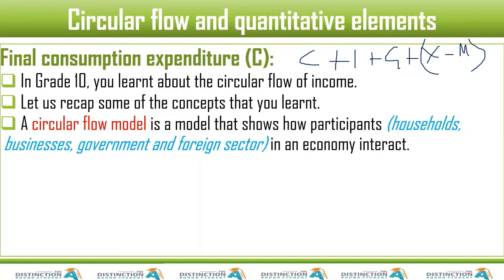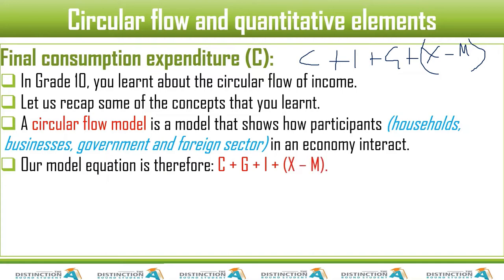In grade 10 you do a closed economy, but now let's talk about an open economy — one which has all four participants. There is also a fifth participant, the financial sector, which is not a main participant. Our model equation is therefore C + G + I + X − M. C is final consumption expenditure by households; G is government spending; I is gross capital formation (investment spending by businesses); X is exports; M is imports. We add exports because money comes in, and subtract imports because money goes out.